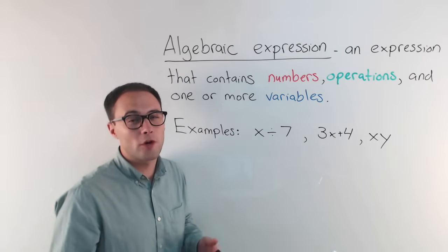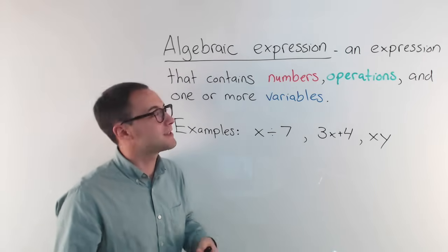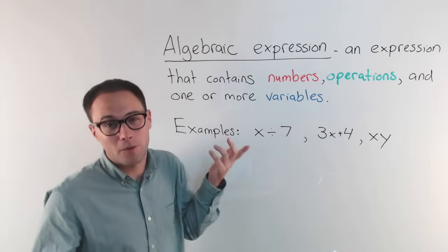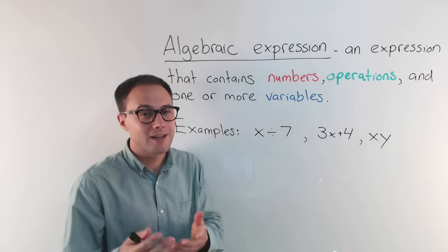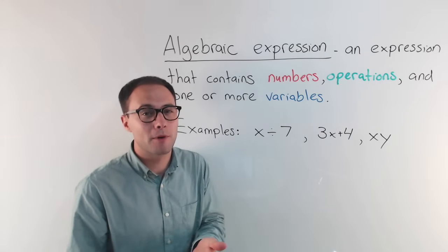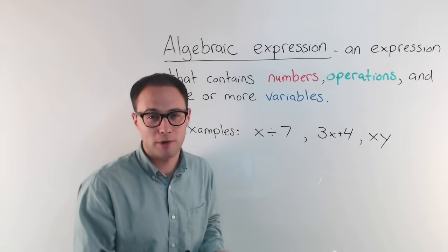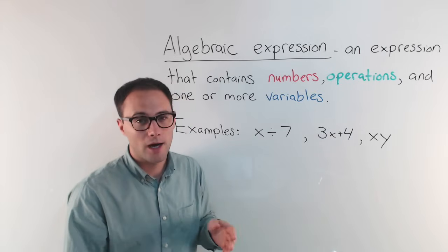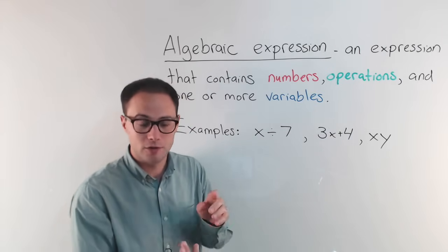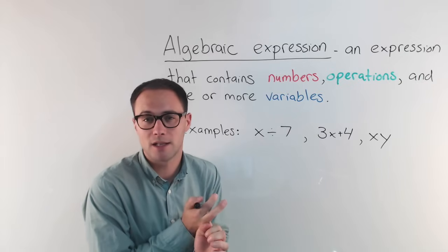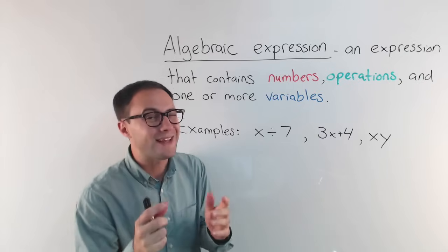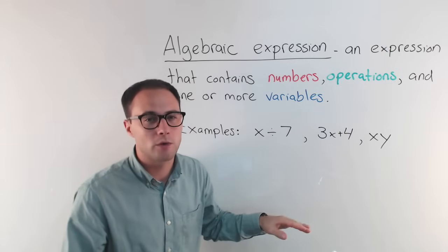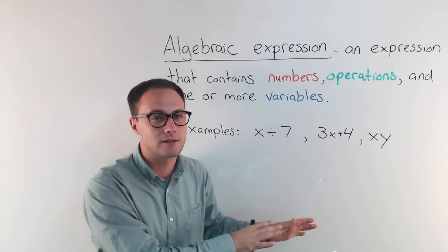Before we start going over some examples, let's talk about some of our terms here. First, what is an algebraic expression? You should remember what a numerical expression is, because we've talked about that before — an expression that includes numbers and operations. There's no equal sign; remember, expressions have no equal sign. That's equations.